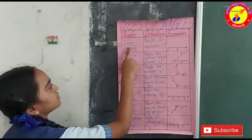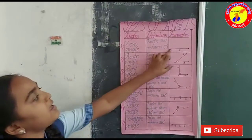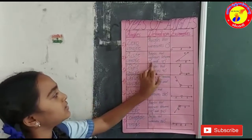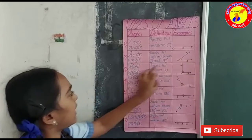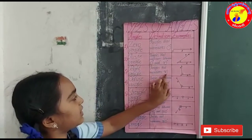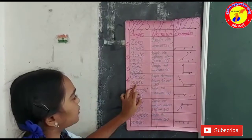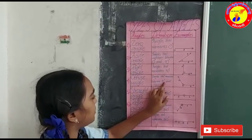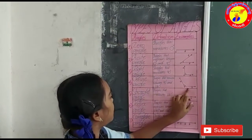First, zero angle — an angle that measures zero degrees is called a zero angle. Acute angle — between zero and ninety degrees is called an acute angle. Right angle — exactly ninety degrees is called a right angle. Obtuse angle — between ninety degrees and one hundred eighty degrees is called an obtuse angle.